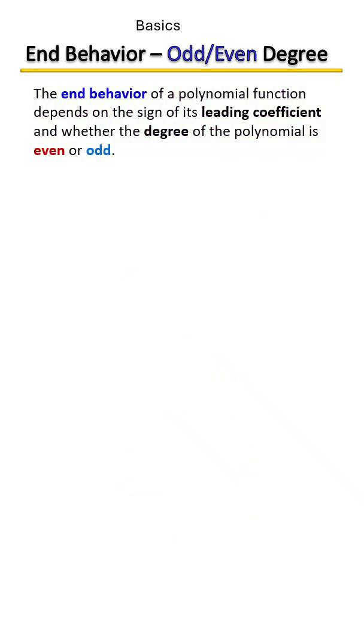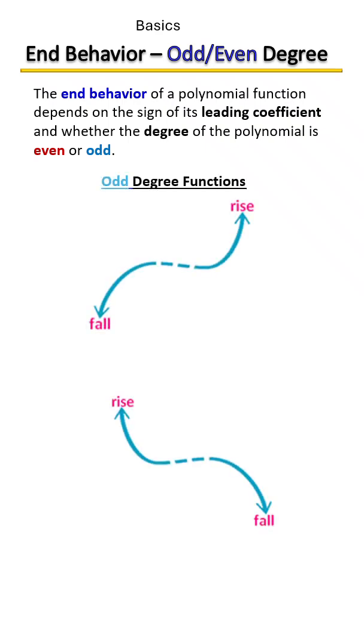Now let's look at odd degree functions. Odd degree functions will always have one end up and one end down. In other words, kind of look like an S shape.